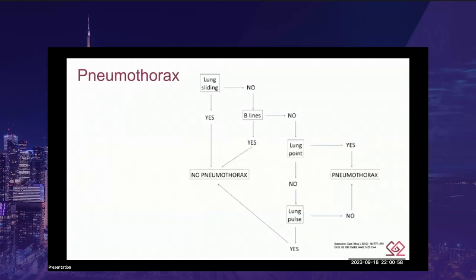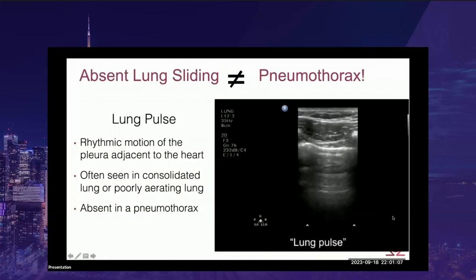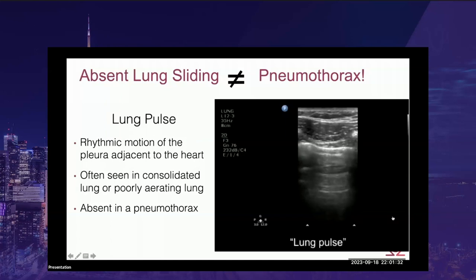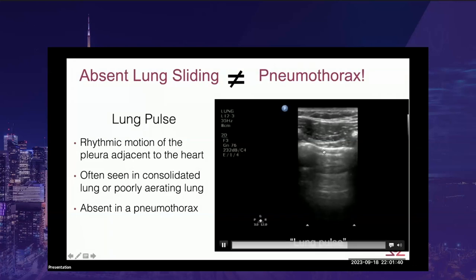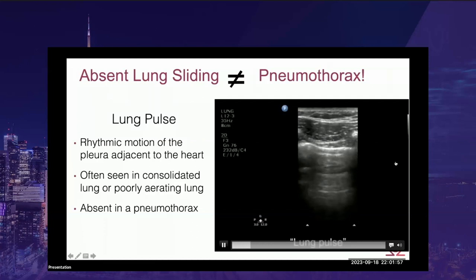If you don't see a lung point, look for a lung pulse — the rhythmic motion of the pleura as it's adjacent to the heart. This is typically seen in patients with poor aeration, such as consolidated lung or right mainstem intubation, where the visceral and parietal pleura have contact but the lung is not being ventilated. Every time the heart beats, it causes a small pulsation of the pleural lines. The lung pulse is absent in pneumothorax — if you see a lung pulse, this cannot be pneumothorax.